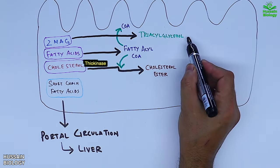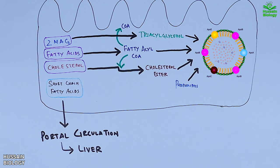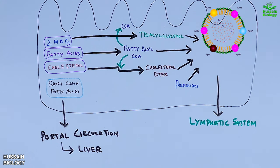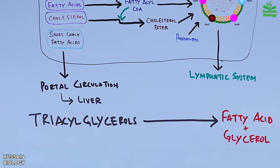The triacylglycerol, fatty acyl coenzyme A, cholesterol ester, and phospholipids are packed into a structure that forms the chylomicron, which is also composed of apolipoproteins. This chylomicron is then absorbed via the lymphatic system and then into portal circulation. Within the blood circulation, triacylglycerols are acted upon by lipoprotein lipase enzyme, yielding free fatty acids and glycerol. These fatty acids are oxidized as fuel or can also be stored when re-esterified.